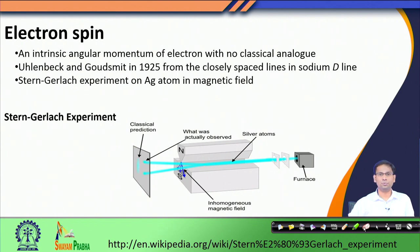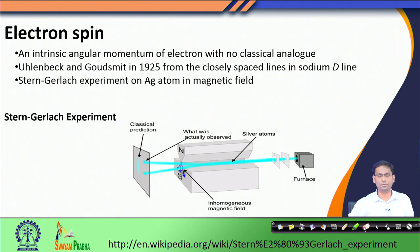One thing that you must keep in mind is that the spin of the electron that we are discussing has no classical analog. Here is a new property that we are going to discuss which does not have any classical analog, but we would provide a quantum mechanical formulation for this.